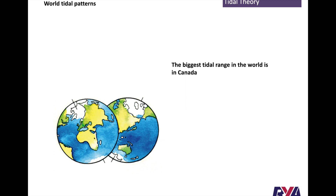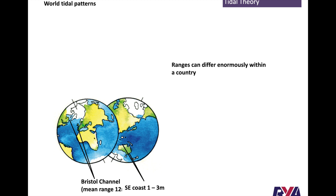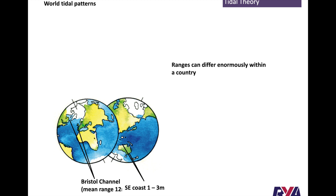The biggest tidal range in the world is the Bay of Fundy, which has a range of 13 metres. The second biggest is in the UK — the Bristol Channel — with a range of 12 metres. Within a country they can vary enormously: Collier Bay on the north-west coast of Australia has a 10 metre range, while the south-east coast has only 1 to 3 metres.